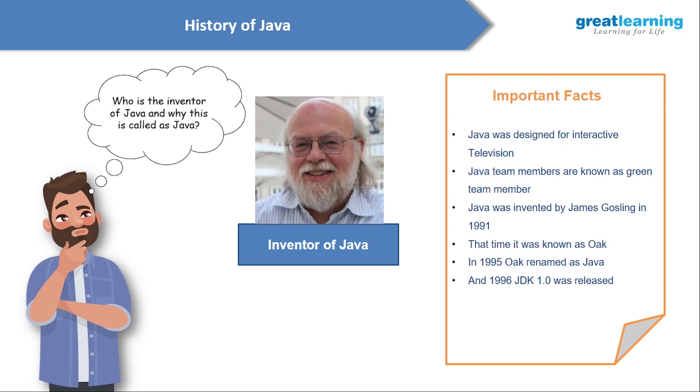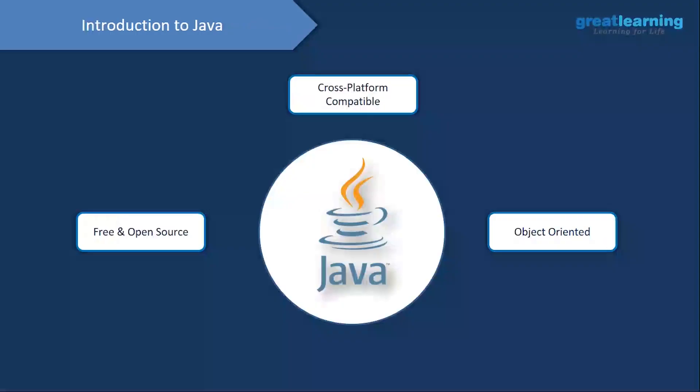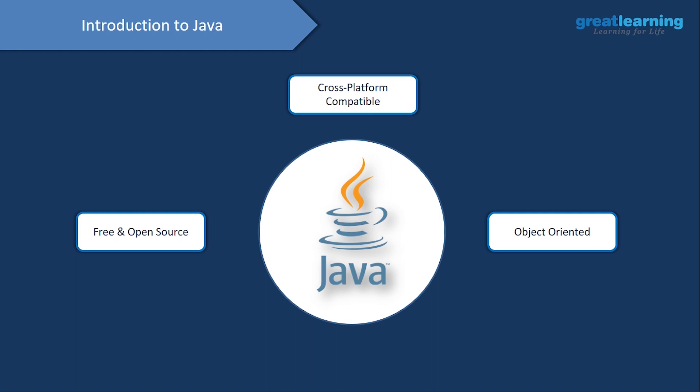On January 23rd, 1996, JDK 1.0 was released. So this is the history of Java. Now we'll see what Java is. Java is a widely-used, high-level programming language. Java is free and open source. It is cross-platform compatible and object-oriented. Java programs are interpreted by the JVM — the Java Virtual Machine — which runs on multiple platforms.